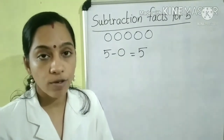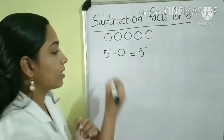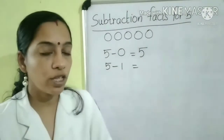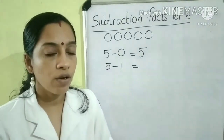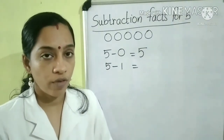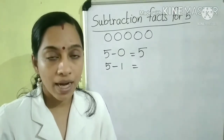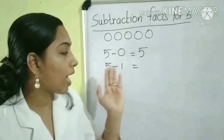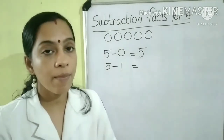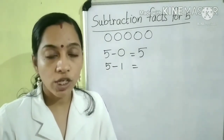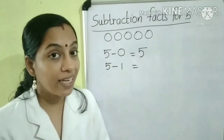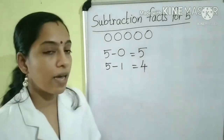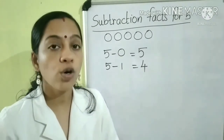Next, we have to subtract 1 from 5. That is, 5 minus 1 is equal to? Tell me children, what is the answer? We know: subtracting 1 from a number gives the number before. So, here we have to find the number before 5. Which number comes before 5? It is 4. So, 5 minus 1 is equal to 4.